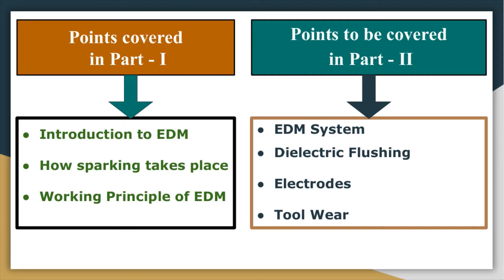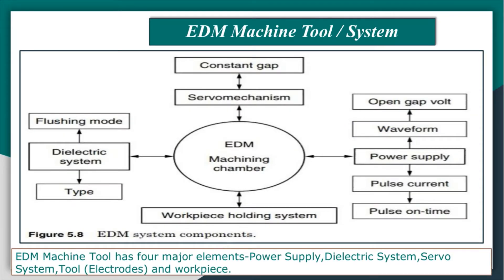Let us move to the first point. You can see in this figure a schematic diagram of the EDM process. There are four components: one is the power supply, second is the dielectric fluid system consisting of pump, delivery system, filtering system, and dielectric fluid tank. Third is the servo system which gives speed to the tool, and fourth is the tool and workpiece. These are the four major components of the EDM machine tool.